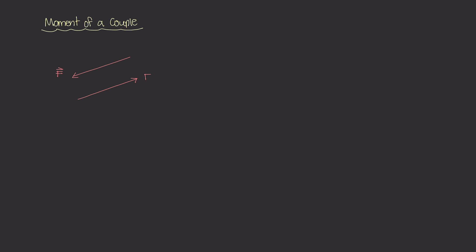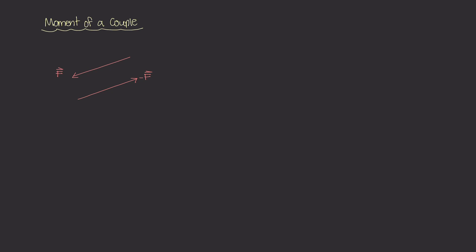Imagine you have two forces. You have one force going this way, and I'll just call that force F. And then you have another force going this way, which I will call minus F. Both of these forces have the same magnitude F. This force is going in one direction, whereas this force is going in the exact opposite direction. Assume that these two forces are in the same 2D plane — one going one way, the other in the opposite direction. They have the same magnitudes and are parallel to one another.